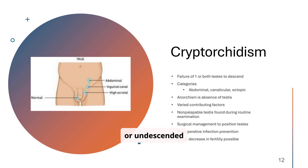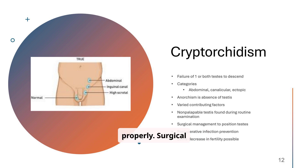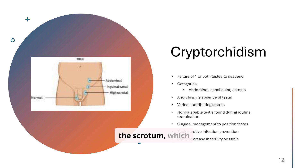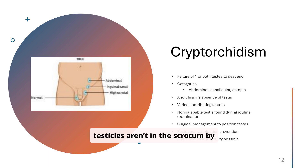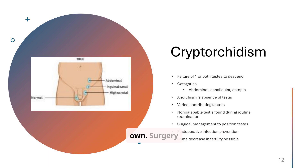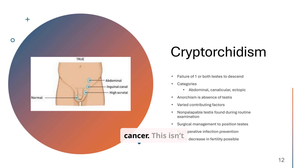Cryptorchidism, or undescended testis, is a condition where one or both testes fail to descend properly. Surgical management is typically required to position the testis in the scrotum, which can help preserve fertility. If the testicles aren't in the scrotum by six months, they probably won't come down on their own. Surgery helps prevent fertility issues and testicular cancer. This isn't just cosmetic — it matters for long-term health.